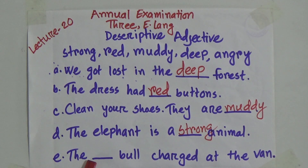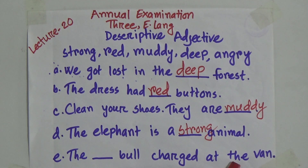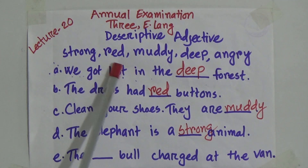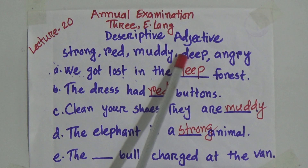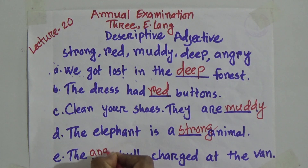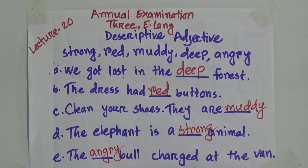Number E: the gap bull charged at the barn. What kind of bull should it be? Strong, red, muddy, deep, or angry? The angry bull charged at the barn.